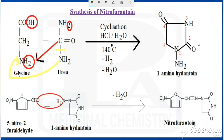To satisfy the valency of this nitrogen, the NH₂ would be attached with this nitrogen. So we are getting the structure. Without NH₂, this can be called hydantoin. The chemical name for hydantoin is imidazolidin-2,4-dione. With the amino group added, this is called 1-aminohydantoin.